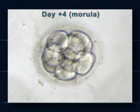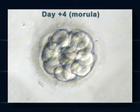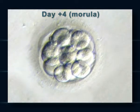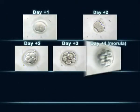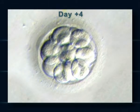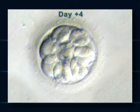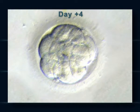On day four, the embryo divides a number of times, becoming a morula. This is when it begins to become compact.